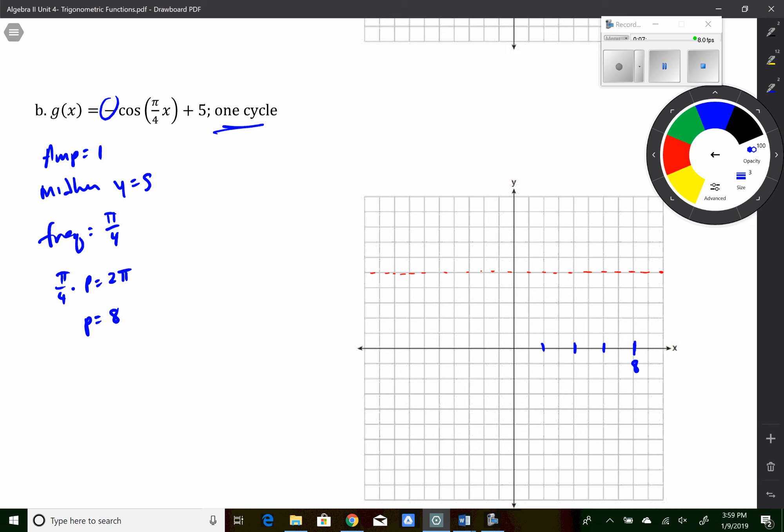Now this is a cosine curve. Remember, negative cosine of x is going to look something like this, where it's like a bell shape. So it's going to start below the midline. Then after a quarter turn, it's going to go to the midline. Then after a half turn, it's going to be at the maximum. After three quarters of a turn, it's going to be at the midline. And then after a full turn, it's going to be at the bottom.